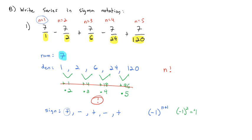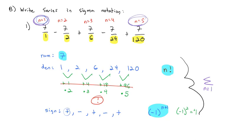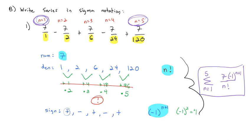So we've got three parts: numerator 7, denominator n factorial, and the alternating signs from negative 1 to the n plus 1. Putting it all together, we write the sum as n goes from 1 to 5 of negative 1 to the n plus 1, times 7 over n factorial. We've taken this series and rewritten it in sigma notation.